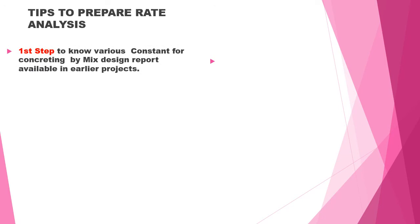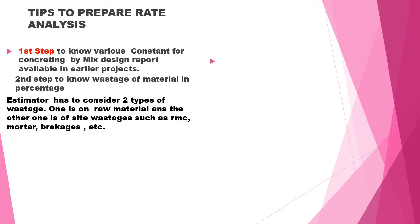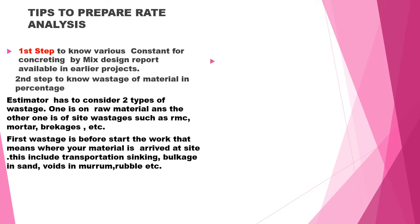How to prepare a rate analysis — step by step. First step: for concreting, use the mix design report available from adjoining or earlier projects. Second step: determine the wastage of material in percentage. Wastages consist of two categories — raw material wastage before work starts, which arrives at the site, and wastage that happens at the site.